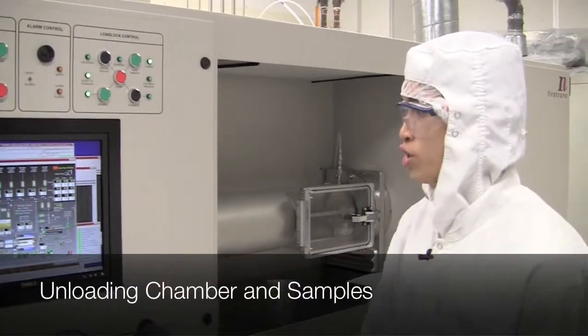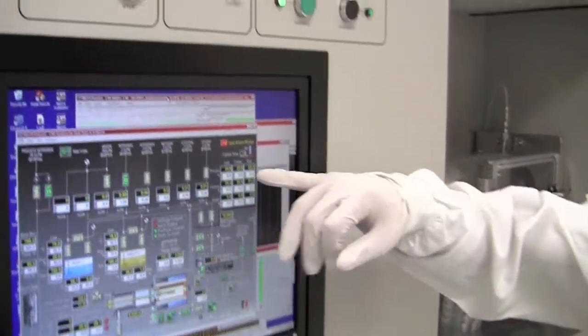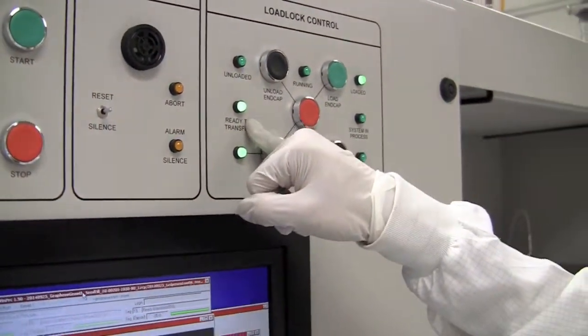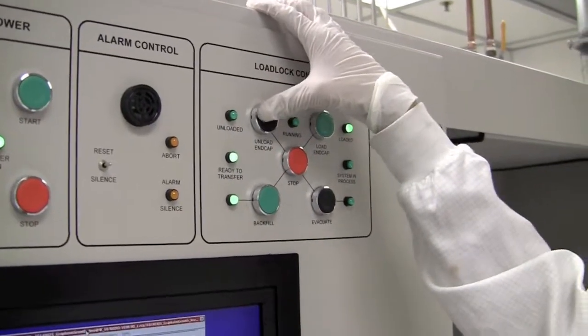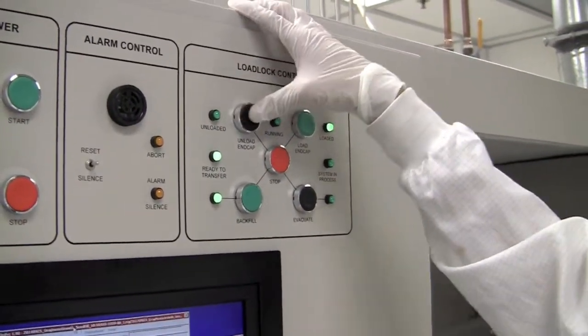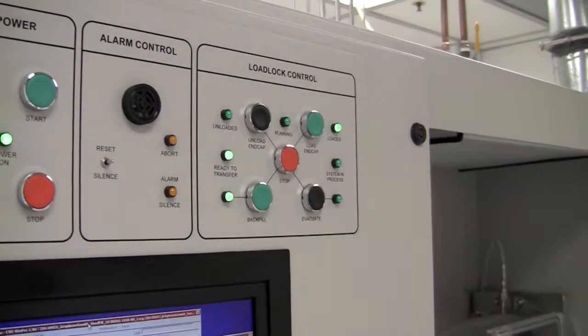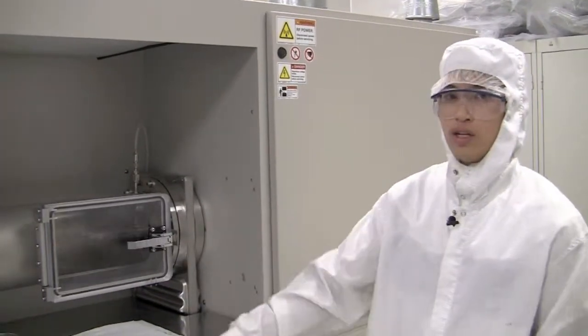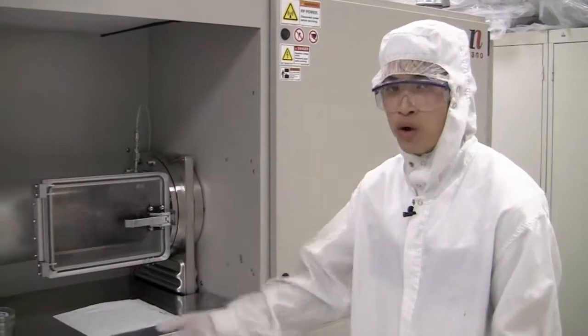Now the growth chamber is back to atmospheric pressure. We can see the ready to transfer light is solid green. That means we can go ahead and on the load lock control, hit unload end cap. This will remove the loading arm back to the loading chamber. Now that the loading arm is unloaded, it's no longer in the growth chamber, it's back in the loading chamber. We can remove our samples.